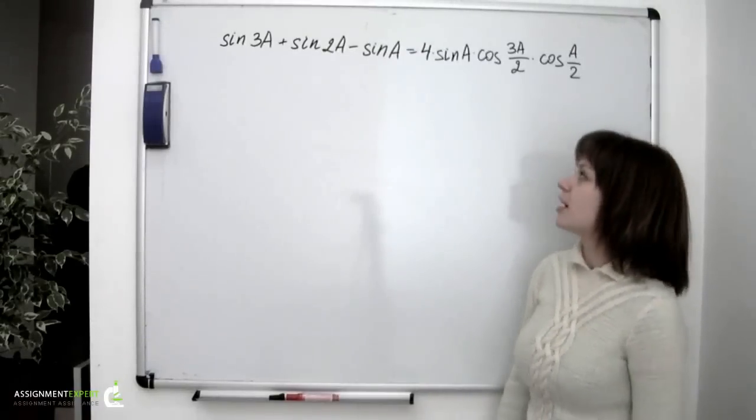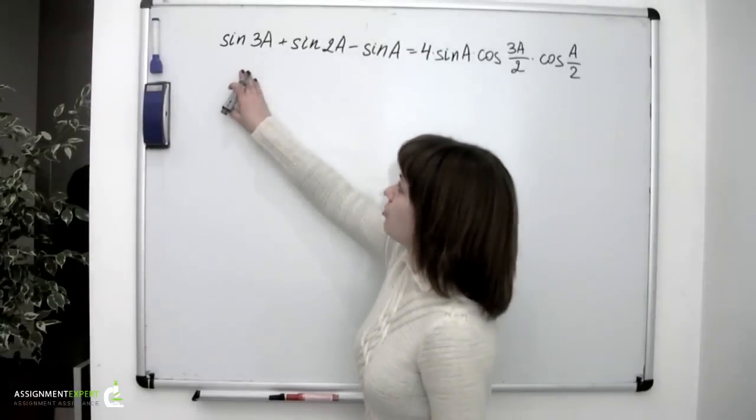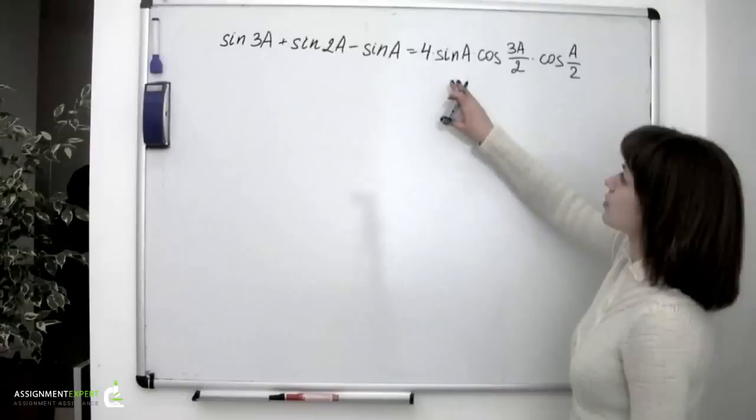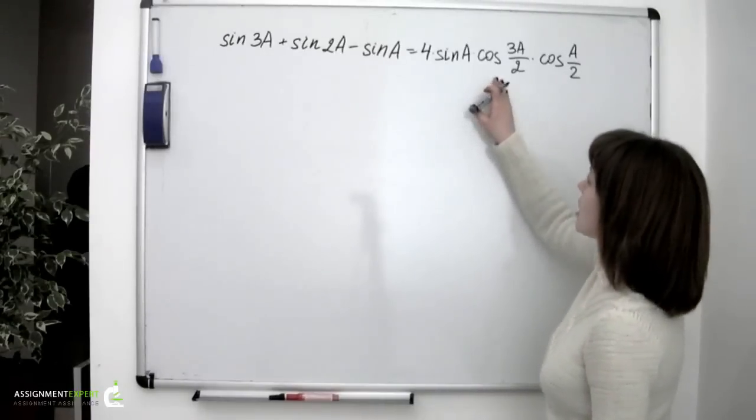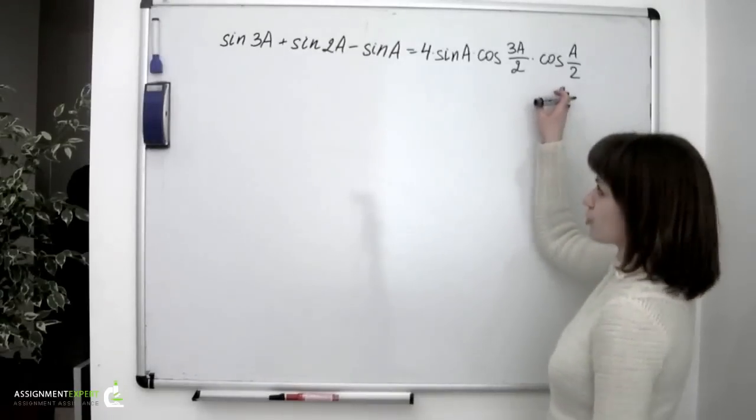In this video we are going to prove the identity which is written on the board. Sin 3a plus sin 2a minus sin a equals 4 times sin a times cos 3a over 2 times cos a over 2.